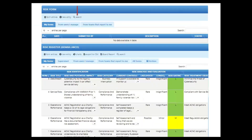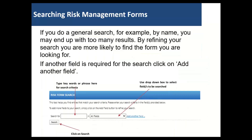At the top of the page you can see the search box on the risk form management page. If you do a general search, for example by name, you may end up with too many results. By refining your search you are more likely to find the form you are looking for.